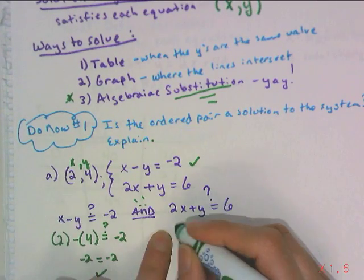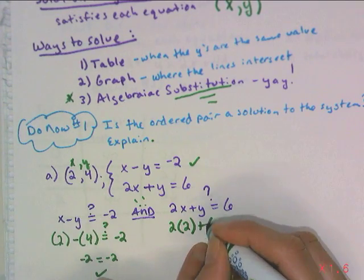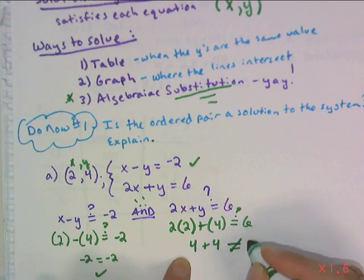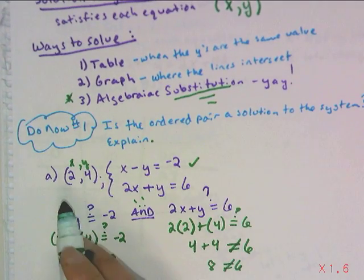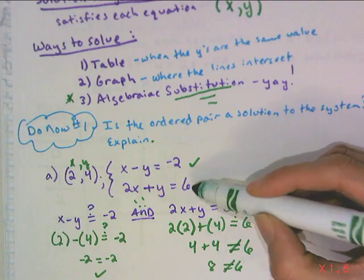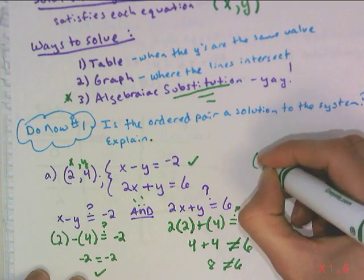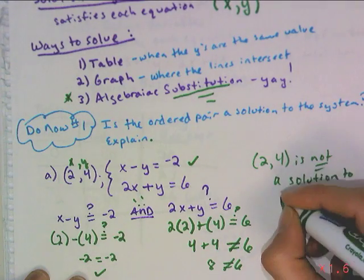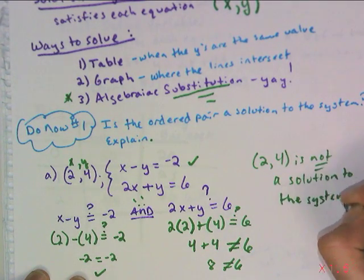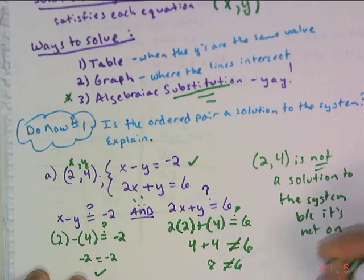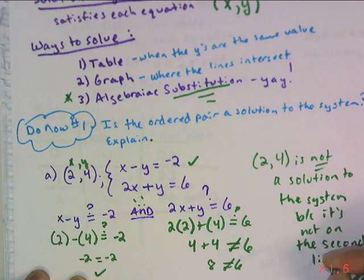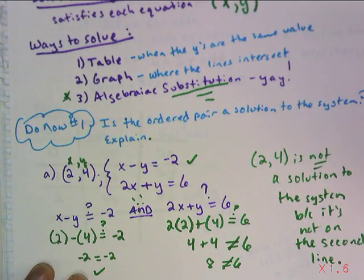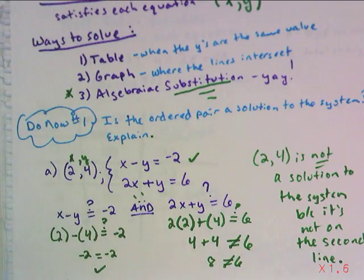Don't just stop once you figure out that it works in the first, you have to prove that it works in the second also. We're going to plug in 2 for the x. So 2 times 2 plus 4 for the y, does that give me 6? We have 4 plus 4. This, in fact, is not 6. So we can conclude that (2,4) is not a solution to the system because it's not on the second line. If you have a system with 4 lines, then you have to test it 4 different times.